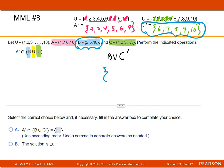And the only number that they have in common is 10. So I need the 2 and the 5, and then the 6, 7, 8, 9, and then the 10. And that is this B union complement of C.